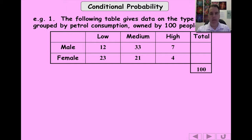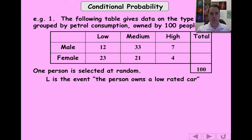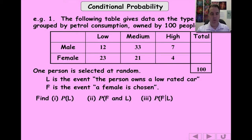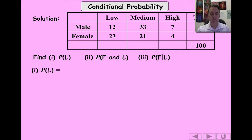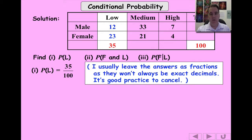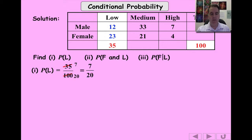Let's look at the first example: types of car grouped by petrol consumption, owned by 100 different people categorised as either male or female. We want to know the probability that a person owns a low-rated car. There are 35 people who own a low-rated car out of the total of 100 surveyed, so that's 35 over 100, which simplifies to 7 over 20, or 0.35 as a decimal.